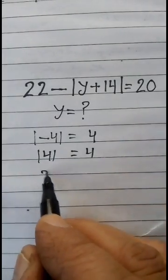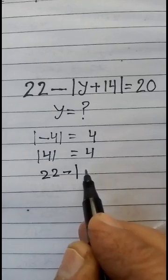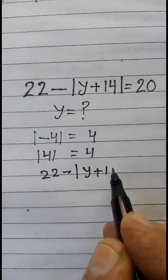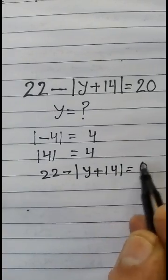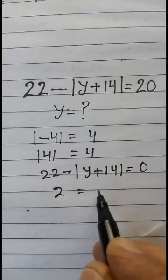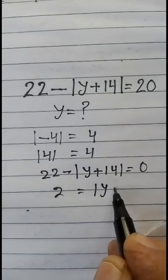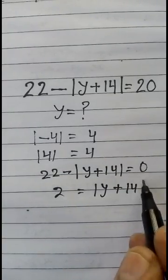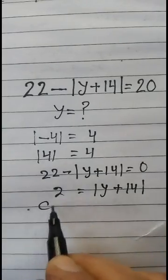22 minus mod of y plus 14 is equal to 20, so mod of y plus 14 is equal to 2. Now, case first: